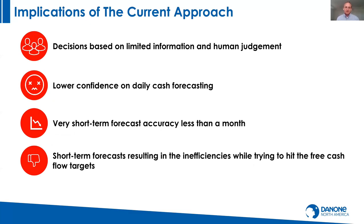Decisions were limited by the information we had. A lot of human judgment and assumptions were required, and we had very little confidence in our daily forecasting specifically. We got reasonably good at weekly, but daily was even harder. We had to keep it very short-term — less than a month — because terms were short and we didn't know what invoices were still being generated. There were a lot of inefficiencies in trying to hit our targets.